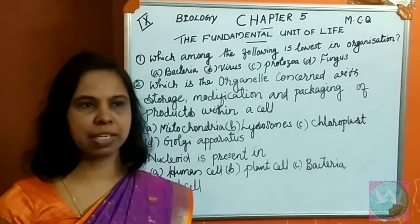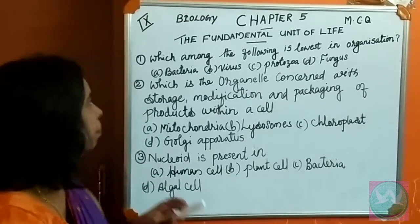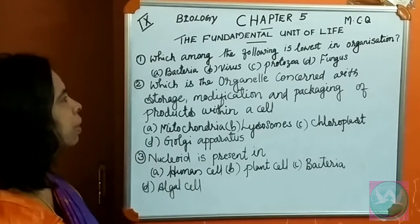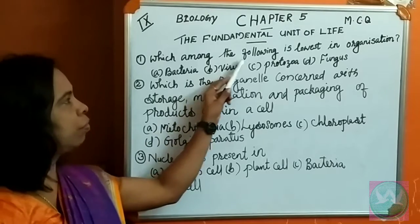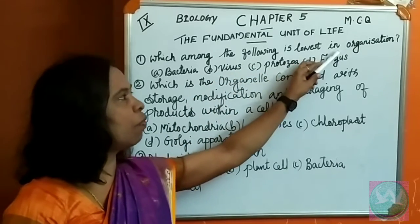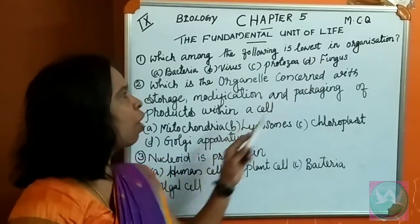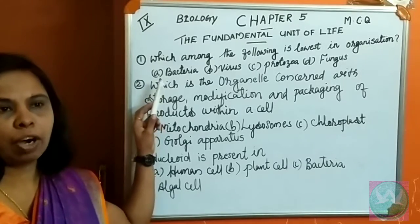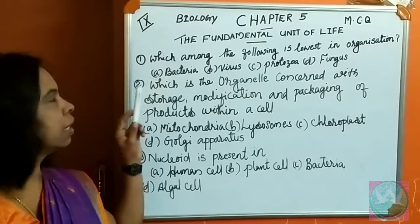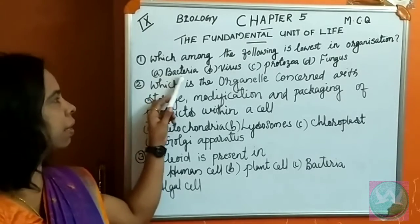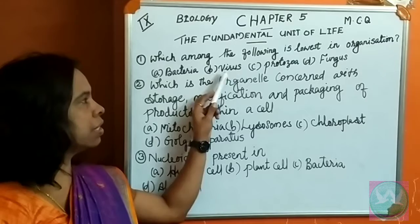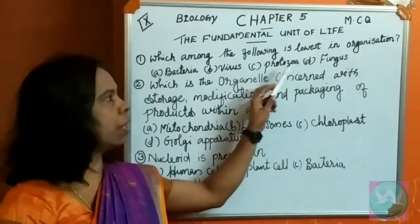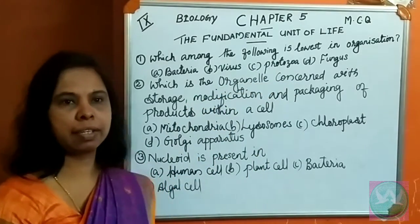We can go through the questions first. First question: which among the following is lowest in organization? Options: A. Bacteria, B. Virus, C. Protozoa, D. Fungus.